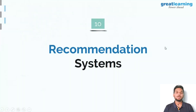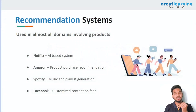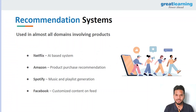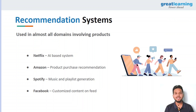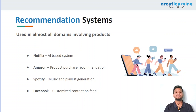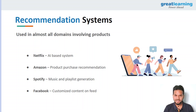At number ten on this Top 10 Applications of Machine Learning video, we have recommendation systems. Recommendation systems are used everywhere in today's world. If you've ever watched a show or movie on Netflix, it uses a very complex AI and machine learning-based solution that even has the capability to change the thumbnails of movies based on your favorite actors.